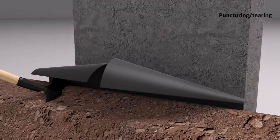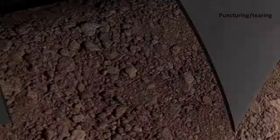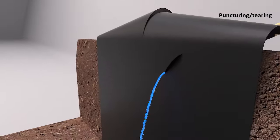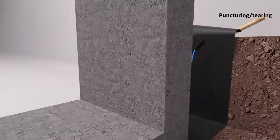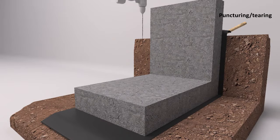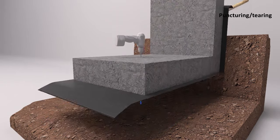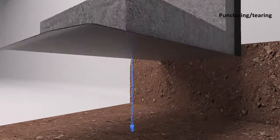Waterproofing membranes are exposed to a high risk of damage. Often this damage occurs in the subsequent stages of the construction schedule. Puncturing often occurs, for example through concrete drilling, backfilling and pipe installation works.